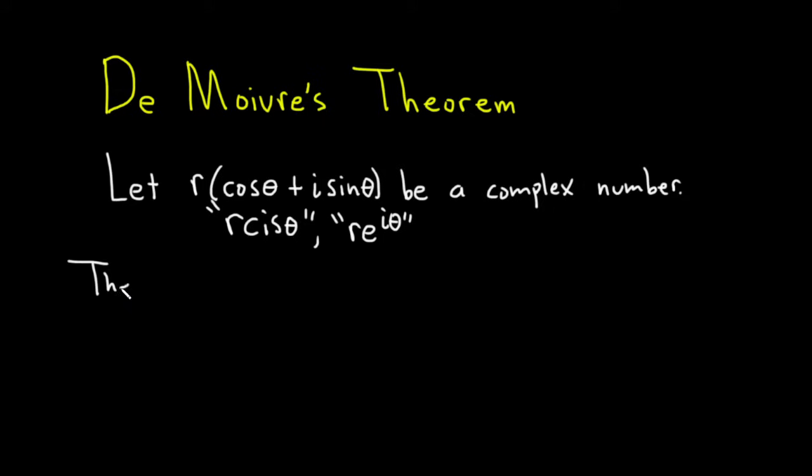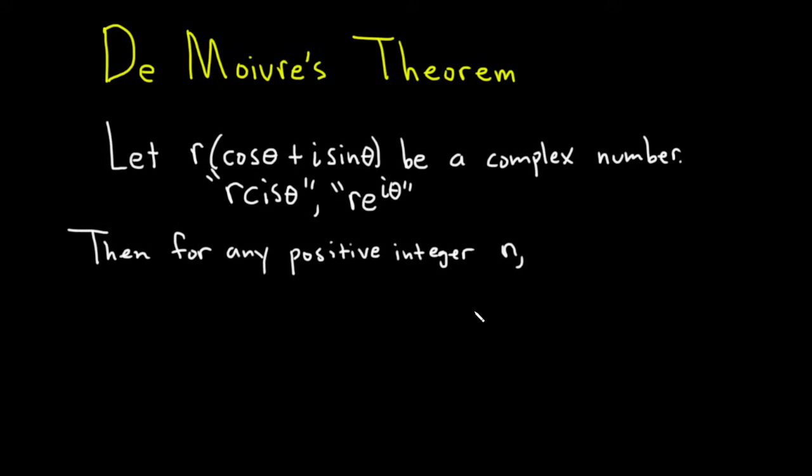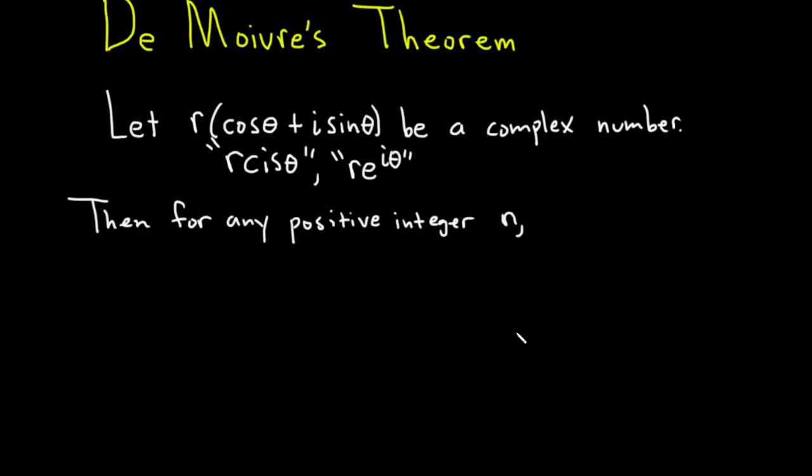Then for any positive integer n, we have the following. We can raise this complex number to a power in a very convenient way. So I'm going to use a different color here and write down all three varieties so you can see how all of these are applied.